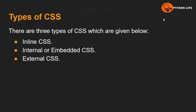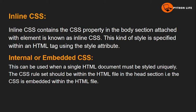Welcome to Python Life YouTube channel. In this class, we will discuss the types of CSS. We will discuss three types of CSS: the first is inline CSS, which is nothing but styling within the line — for example, using the style attribute for background color or font color.